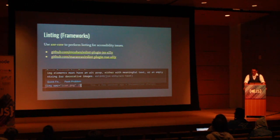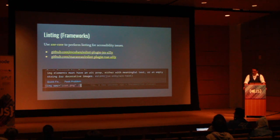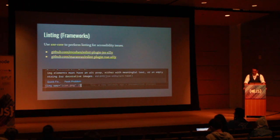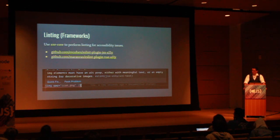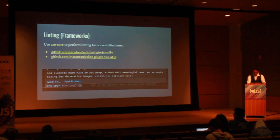In this image, I'm showing VS Code highlighting the fact that the image element is missing the alt attribute. It shows the error, why it's wrong, and shows the linting rule that will tell you more information about how to fix it. And it does this for a great number of accessibility issues.